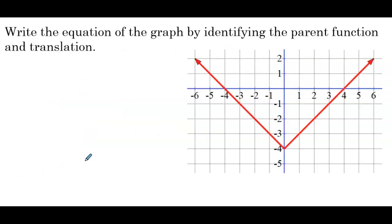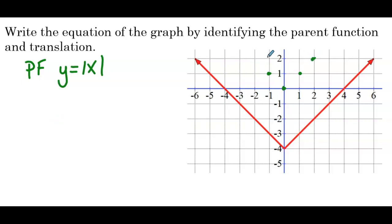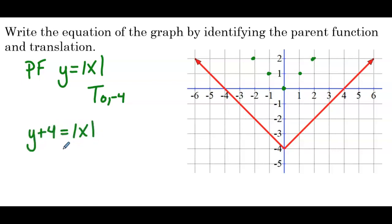Now we're asked to write the equation of a graph by identifying the parent function and the translation. The parent function is the absolute value function, y equals the absolute value of x. Plotting those points and comparing, all the points have been moved down by 4. So the translation is 0, negative 4. In our equation we add 4 to y, giving y equals the absolute value of x minus 4.